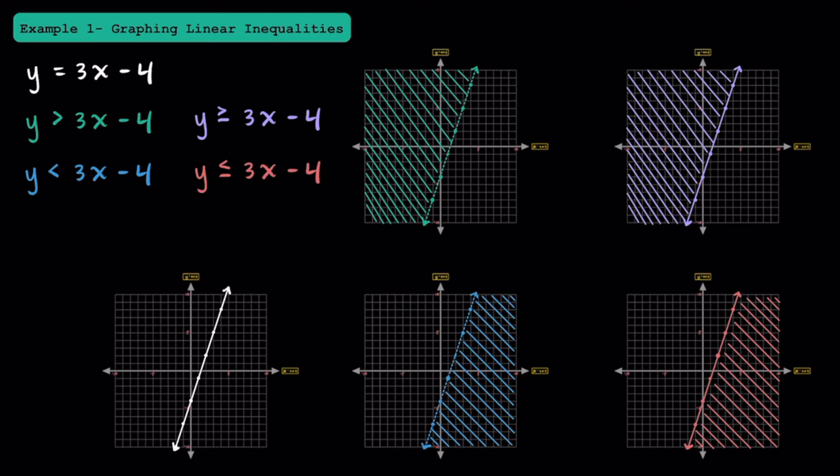The key thing to remember about graphing linear inequalities is that they work the same way as linear equations — you just have to worry about dashed lines and solid lines, and which side to shade. If you have a less than or greater than symbol, you're going to have a dashed line. When you have greater than or equal to or less than or equal to, you're going to have a solid line. To know which side to shade, test an ordered pair: if it makes the inequality true, shade that side; if it doesn't, shade the other side. Hopefully that gives you a quick review on how to graph linear inequalities.